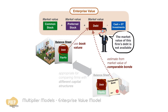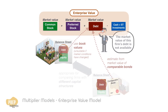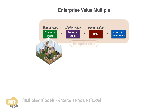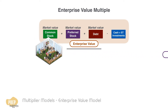Book value, however, may not be a good estimate of market value if firm and market conditions have changed significantly since the bonds were issued. An enterprise value multiple takes the enterprise value of the firm as the numerator, and the denominator can be revenue. But more often than not, the company's EBITDA is used.